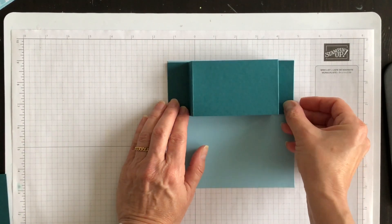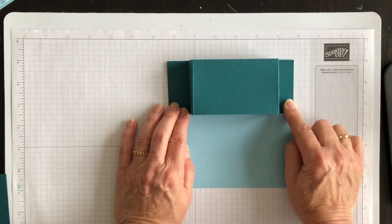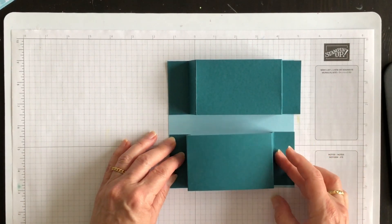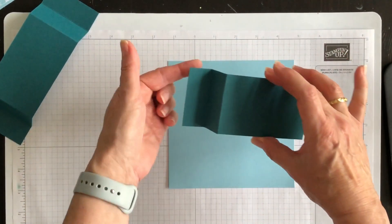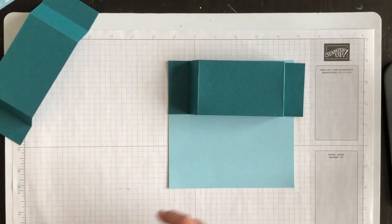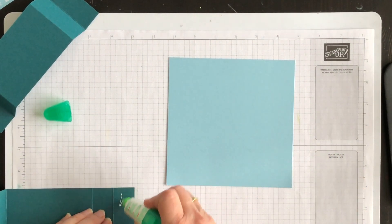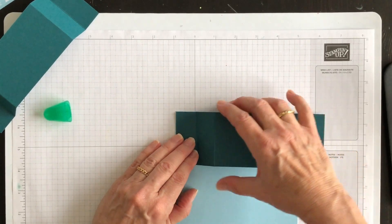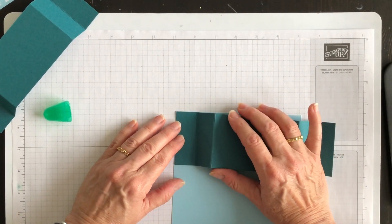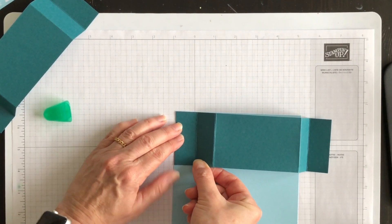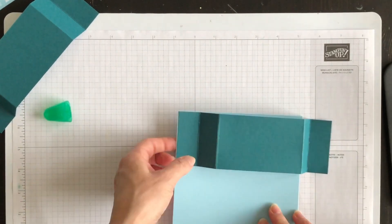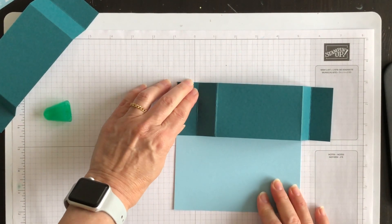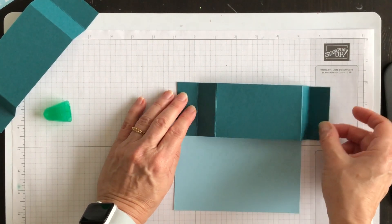So what we're going to do is we're going to adhere these fun fold pieces that we've created, one at the top and then the second one will be at the bottom. So what we're going to do is just adhere this particular panel first using my multi-purpose liquid glue. I'm going to line it up so that it starts at the top and lines up perfectly along the side. That's why we use multi-purpose liquid glue. Now I'm not going to adhere all the rest of it down just yet.